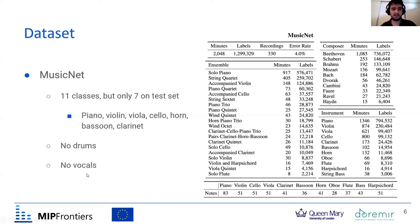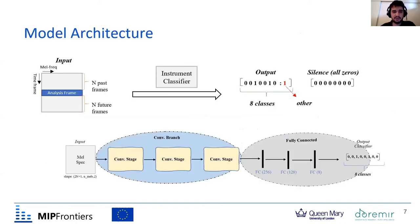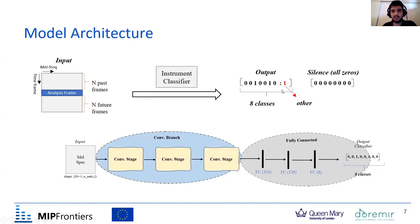The dataset has no drums or vocals. It includes labels for all the onsets and offsets, as well as notes and other annotations, but we only used the instrument labels, not pitch. Multiple instruments can be active at the same time. We used eight output classes: seven for individual instruments and one for other instruments — the four that were in training but not in the test set — while silence is represented as all zeros.